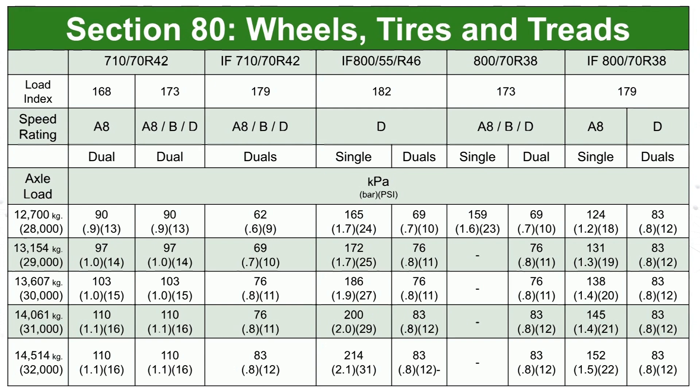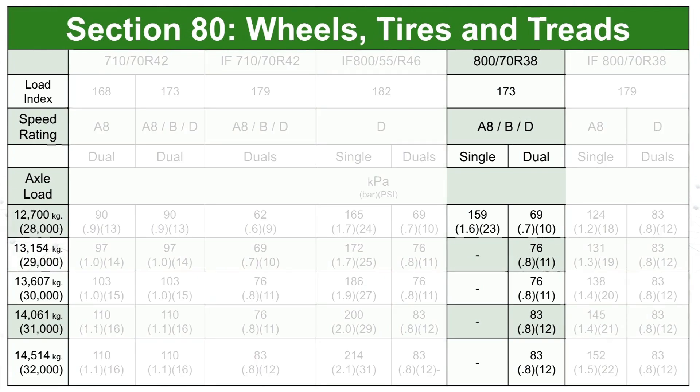For this example, we have a 9620R equipped with dual 870R38 tires. The front axle is carrying 31,800 pounds and the rear axle is carrying 28,200 pounds. You can see we need 10 psi in the rear tires and 12 psi in the front.